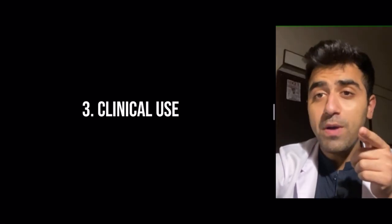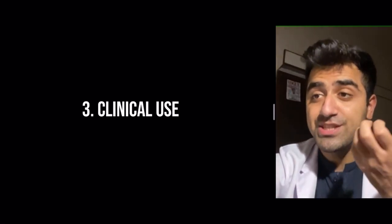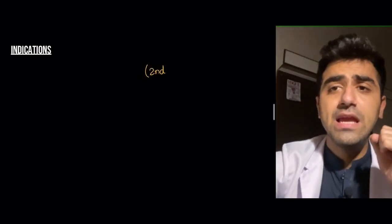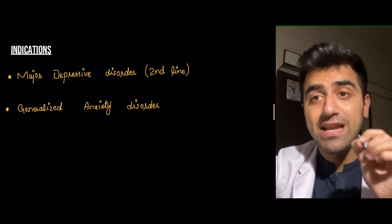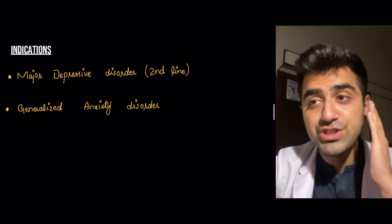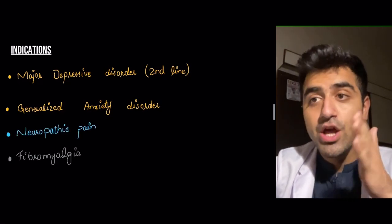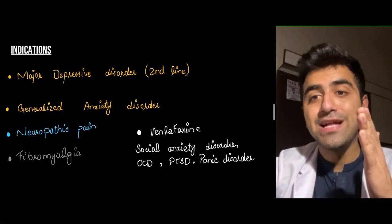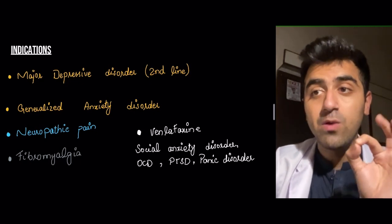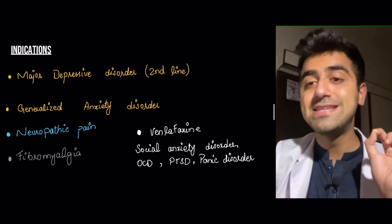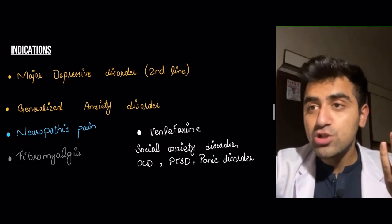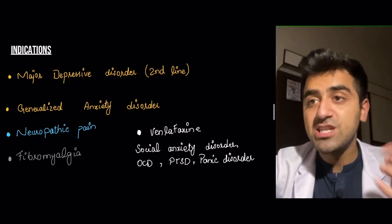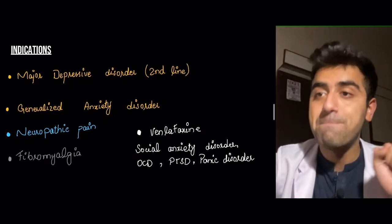Now let's talk about clinical use — the conditions in which these drugs are indicated. For major depressive disorder, SNRIs are a second-line drug. They are also indicated for generalized anxiety disorder, neuropathic pain, fibromyalgia, and then venlafaxine only is indicated for social anxiety disorder, OCD (obsessive compulsive disorder), PTSD (post-traumatic stress disorder), and panic disorder.